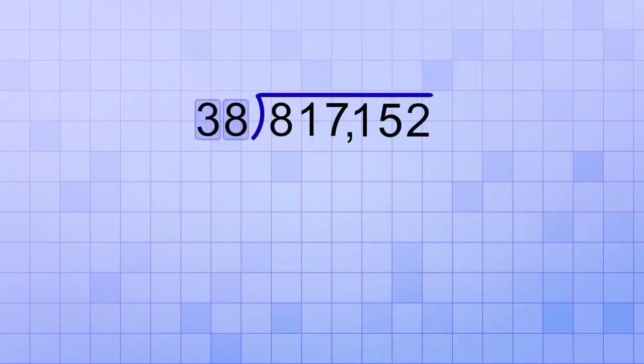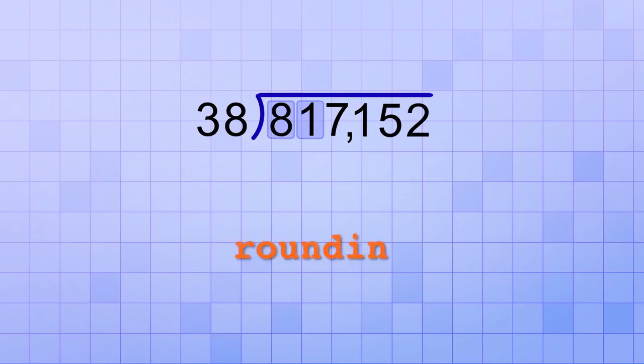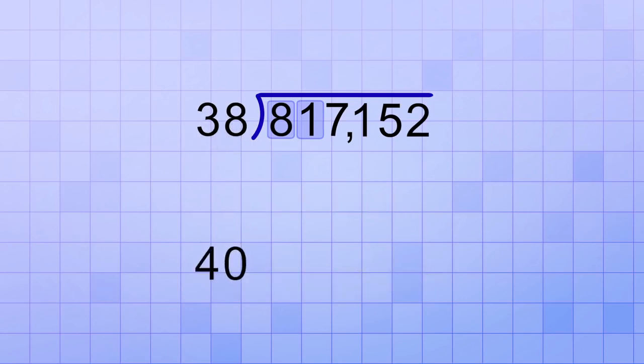Since we have a two-digit divisor, we start with the first two digits of the dividend and ask, how many 38s will it take to make 81? Again, we're going to use rounding to help us estimate the answer. 38 is close to 40, and 81 is really close to 80. And since 80 is 2 times 40, my estimate for the first answer digit will be 2. 2 times 38 equals 76, and 81 minus 76 leaves a remainder of 5.